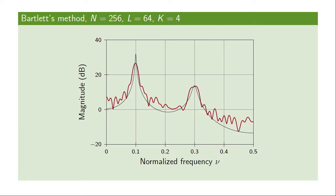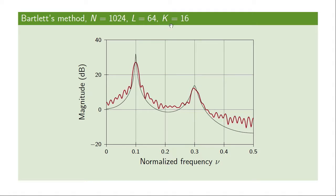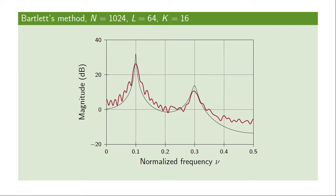Let's increase the number of blocks from 4 to 16 using a data length of 1024 while keeping blocks the same length. The variation between different realizations is further reduced. In this case, the deviation of the estimate from the true power spectral density has more to do with spectral leakage rather than variance of the estimator, which we can address using modified periodograms instead of periodograms.